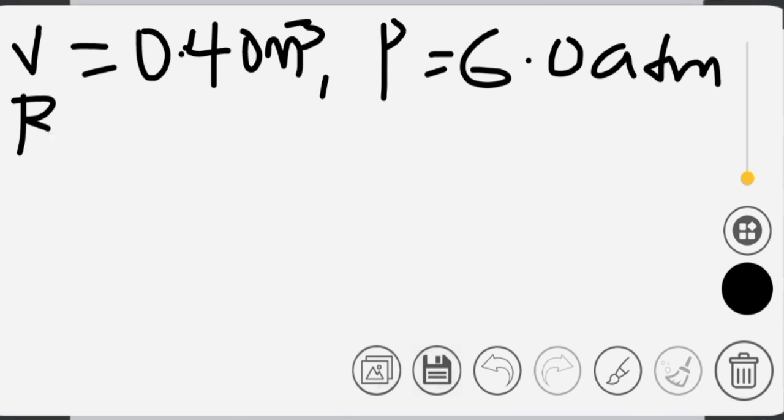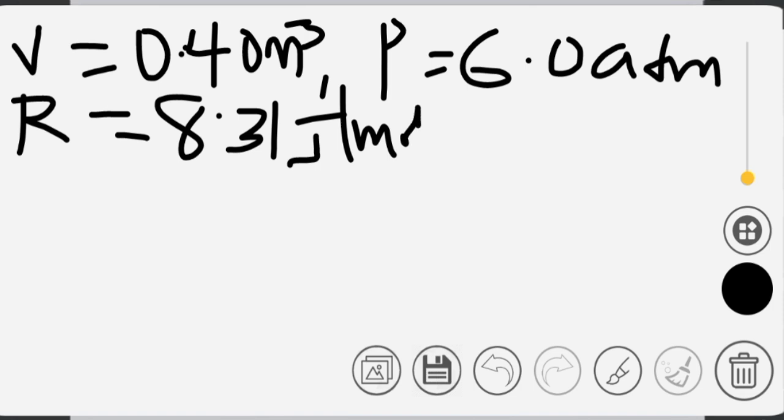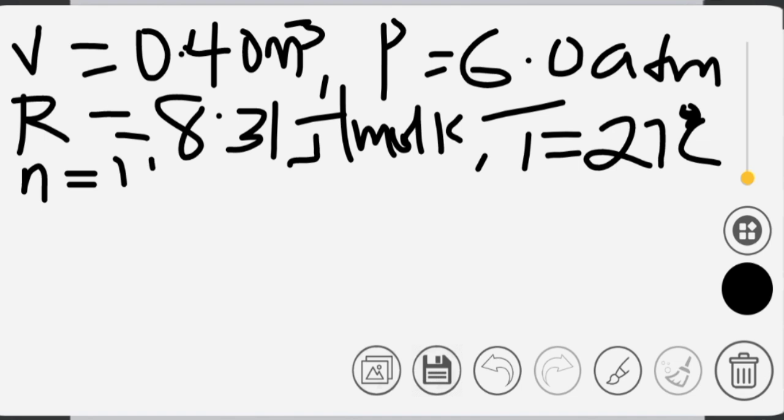We are also having molar gas constant to be 8.31 joules per mole kelvin. Then we are having temperature to be 27 degrees Celsius. And we are asked to look for the number of moles.